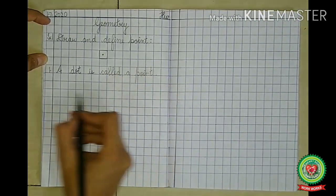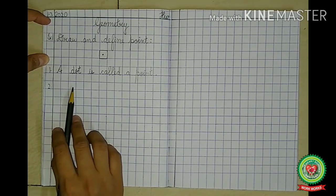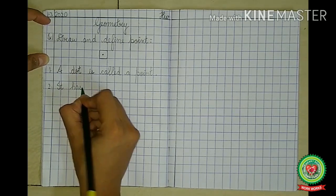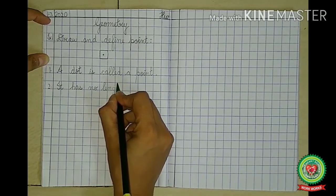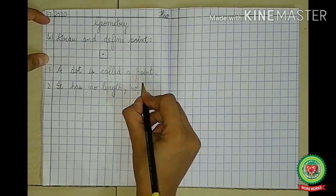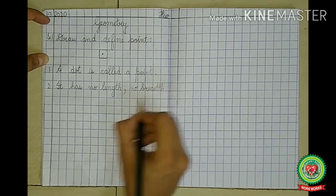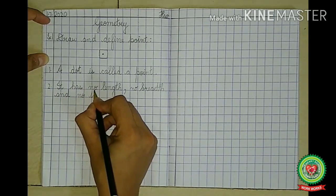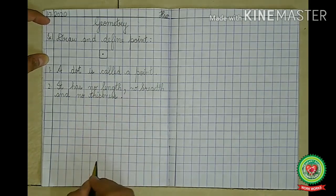Full stop. Now leave a line. Put number 2. It has no length, no breadth, and no thickness. Full stop.